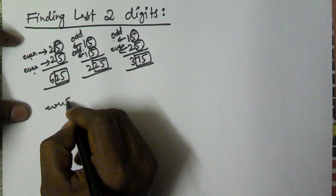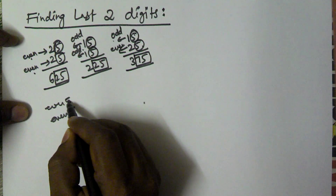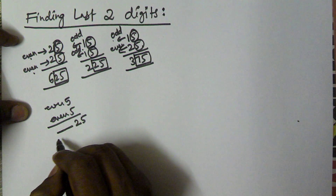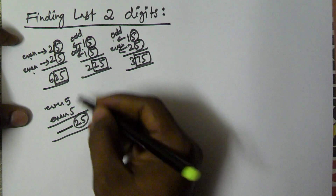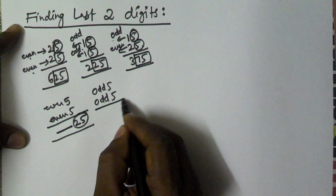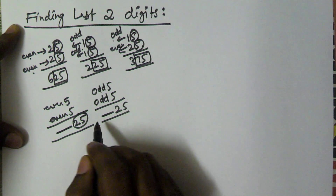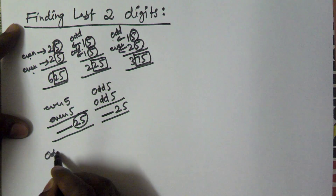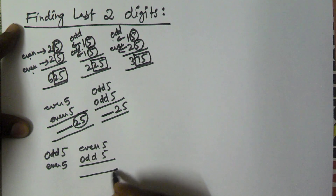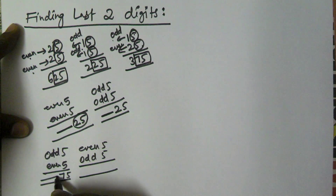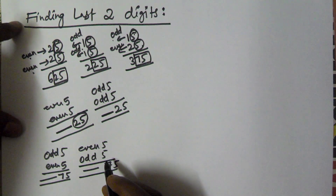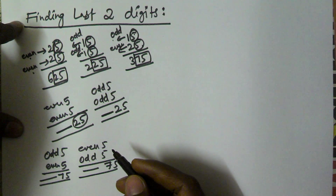So in the case of odd 5 times odd 5, the last 2 digits are going to be 25. But if we have odd 5 and even 5, or even 5 and odd 5, then in the multiplication result the last 2 digits are going to be 75. Using this concept we will find the last 2 digits of given multiplications where each number is ending with 5.